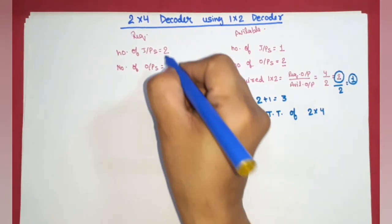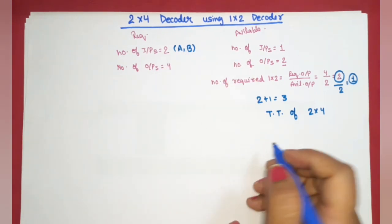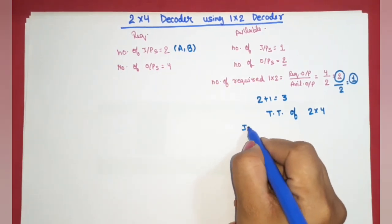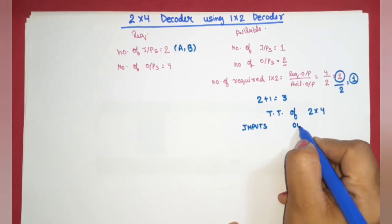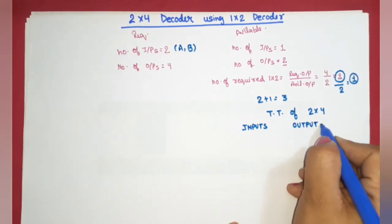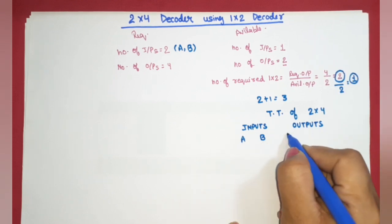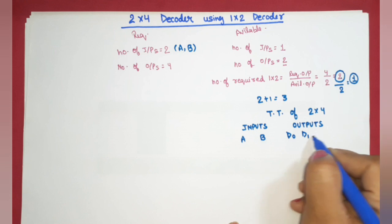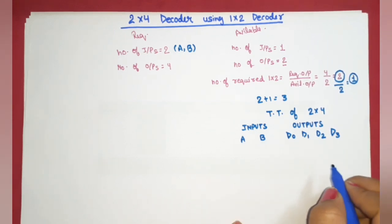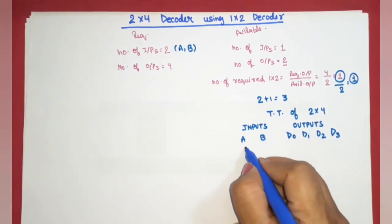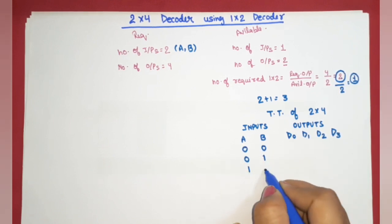We take two inputs; assume the first input is A and the second input is B. The outputs are D0, D1, D2, and D3 — four outputs in total. With two inputs there are four combinations: 00, 01, 10, and 11.